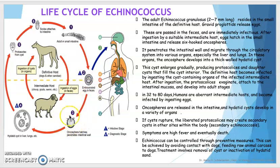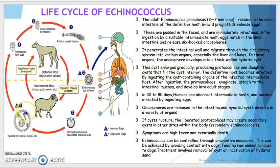The six-hooked oncosphere is released and penetrates the intestinal wall, migrating through the circulatory system into various organs, especially the liver and lungs. In these organs the oncosphere develops into a thick-walled hydatid cyst, as shown in the picture. This cyst enlarges gradually, producing protoscolices and daughter cysts inside it.